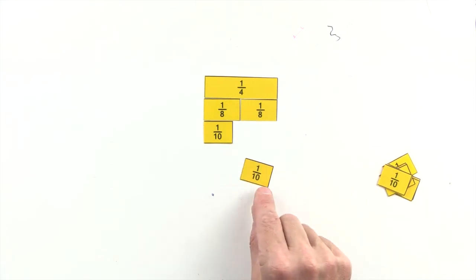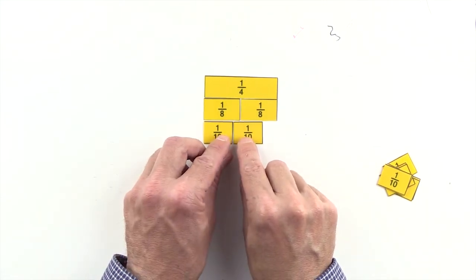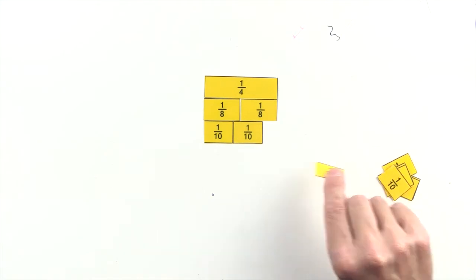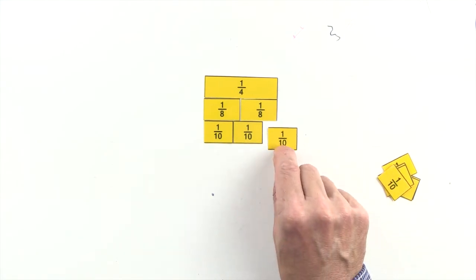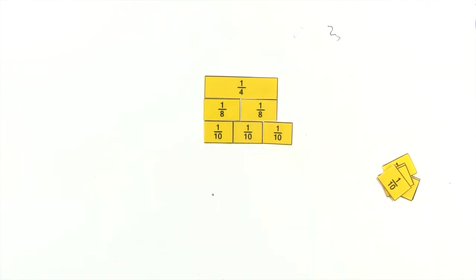One tenth and two tenths are less than one quarter, and three tenths are greater than one quarter, so we can't use tenths to make an equivalent fraction to one quarter.